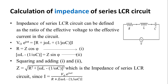Now, let us do the calculation of impedance of a series LCR circuit. A series LCR circuit means a circuit in which the components — resistor, inductor, and capacitor — are connected in series and a sinusoidal alternating voltage is applied. Impedance of a series LCR circuit can be defined as the ratio of the effective voltage to the effective current in the circuit — that is, the total opposition to the flow of current offered by the resistance, inductance and capacitance.